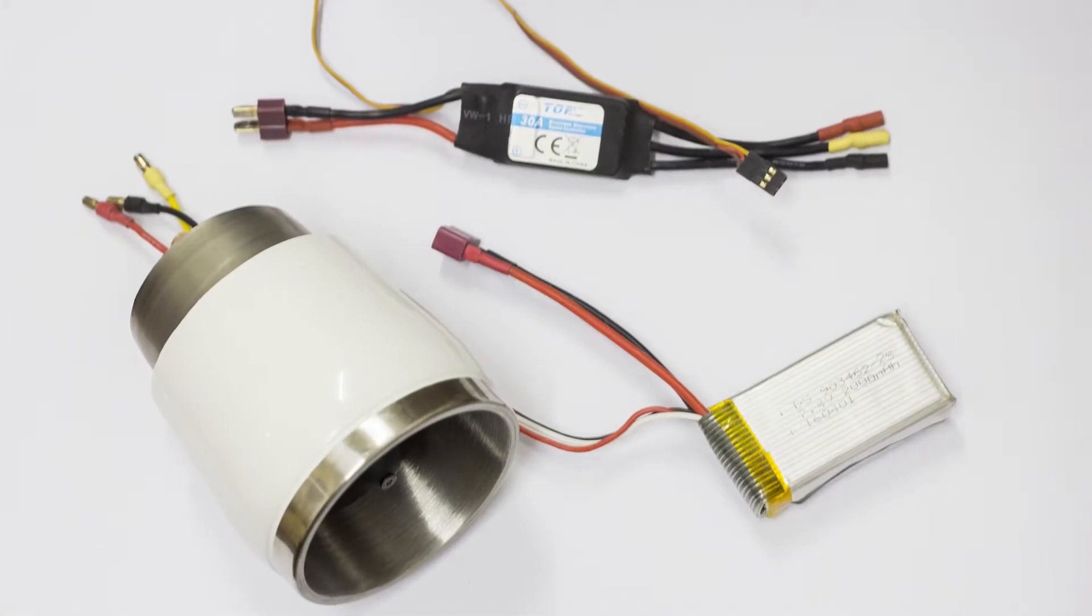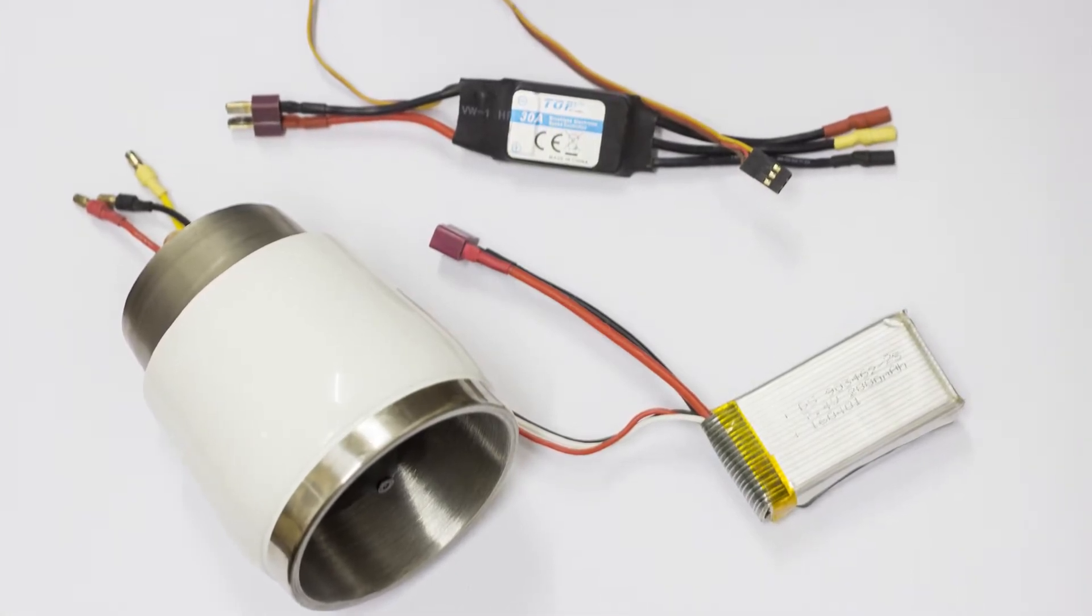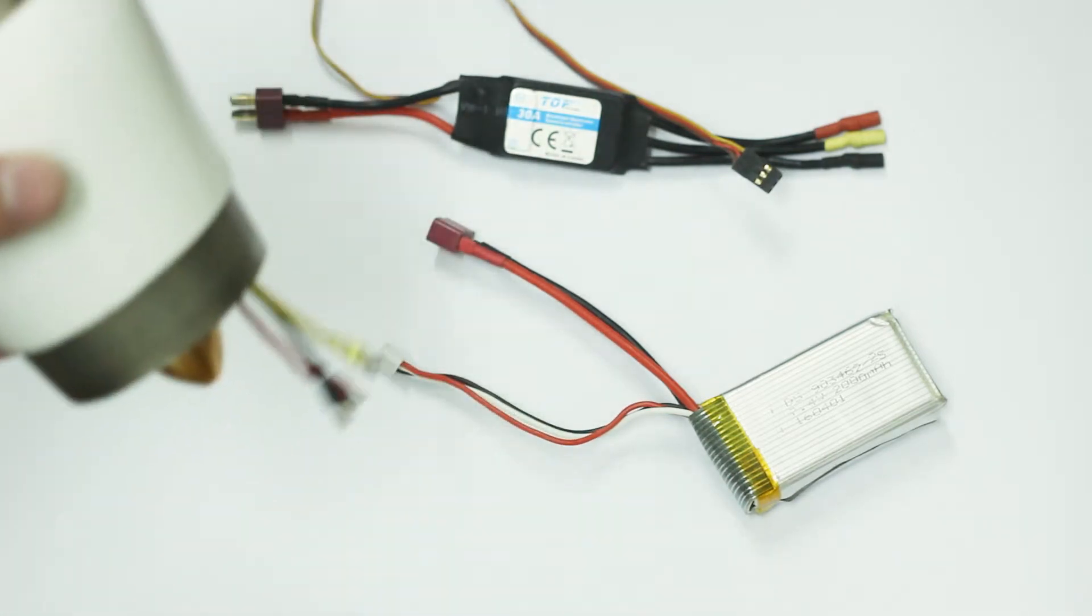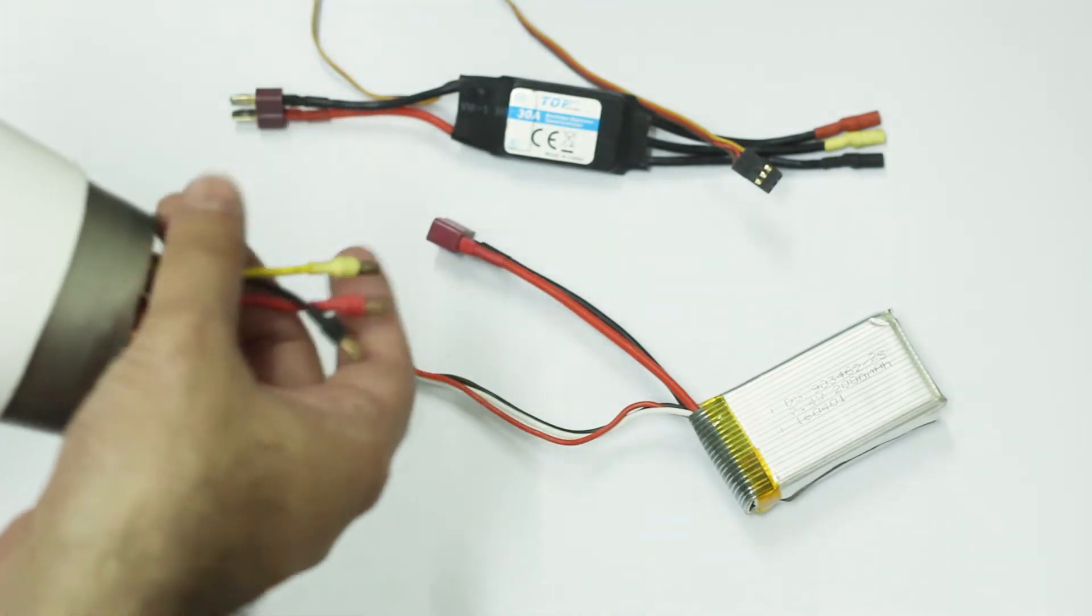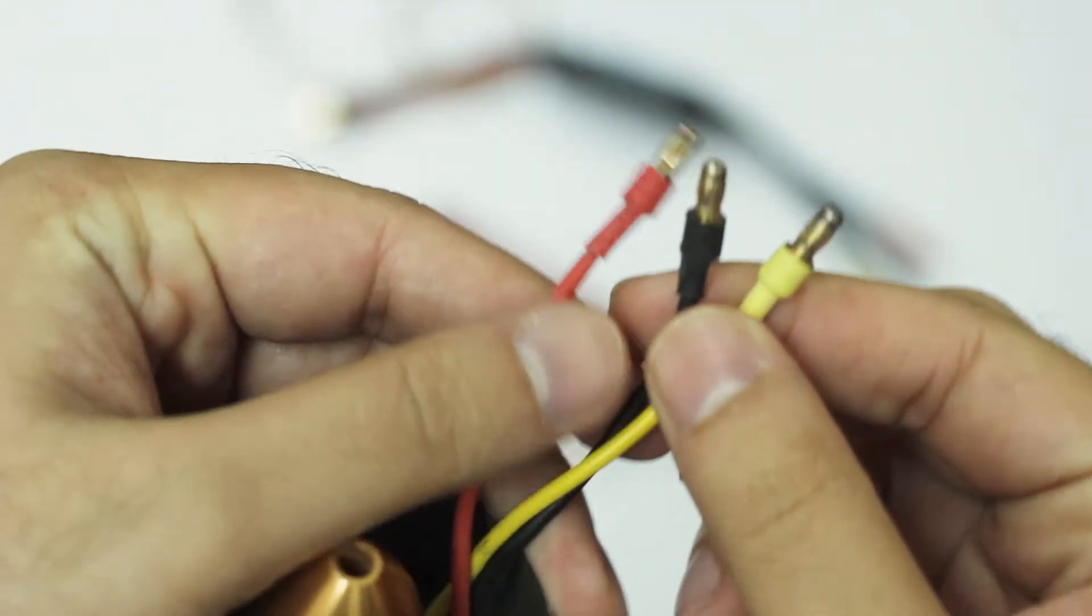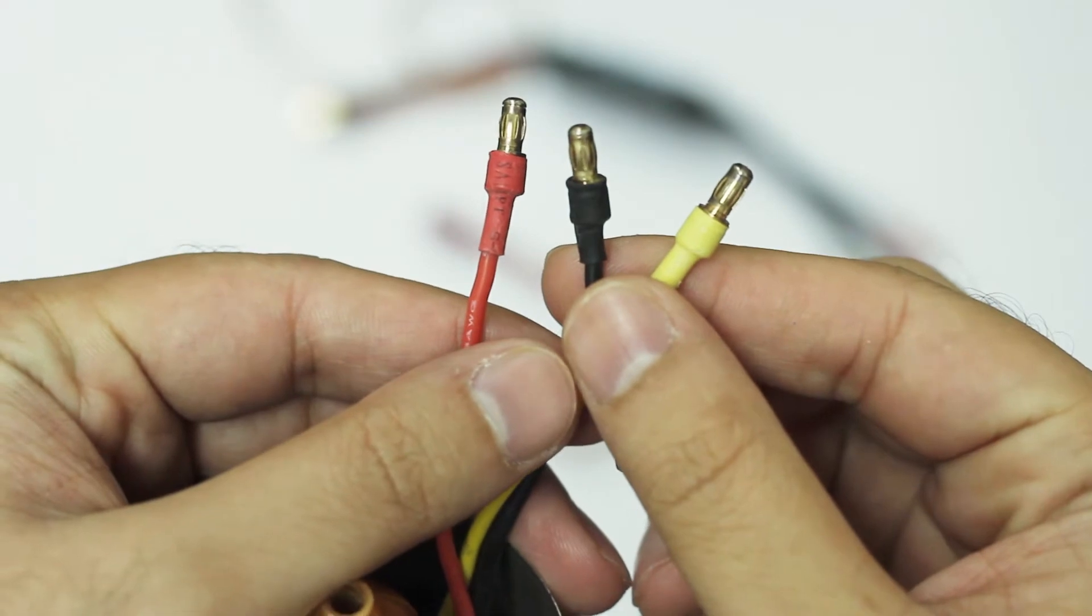Hello, in this video today we will see how we can run a brushless motor or EDF unit using a servo tester. This is the EDF unit and it has three wires: red, black, and yellow, using banana connectors.